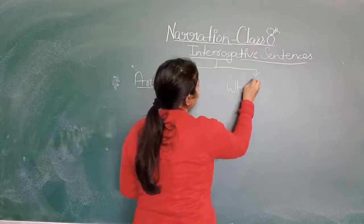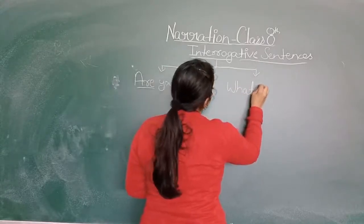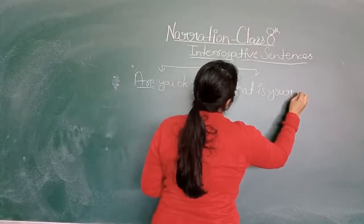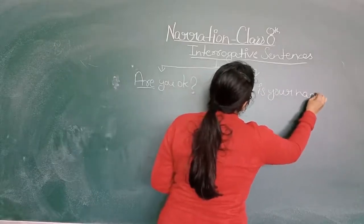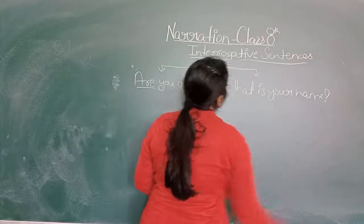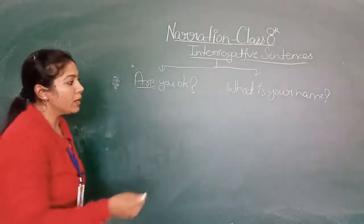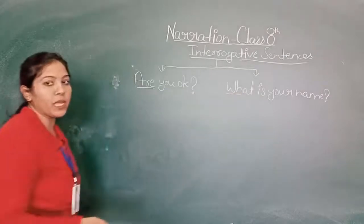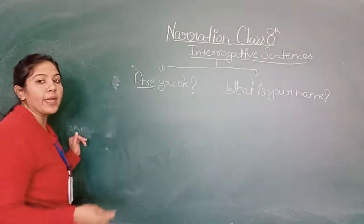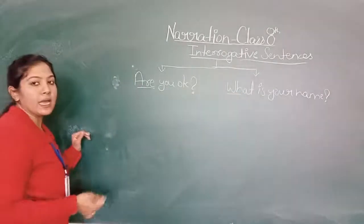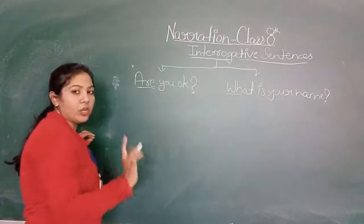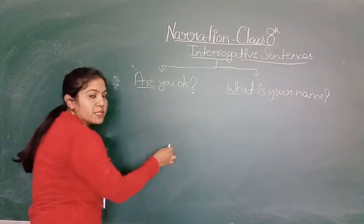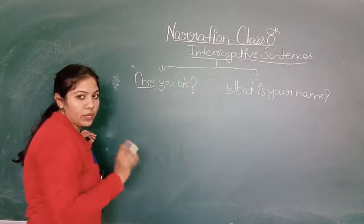Suppose a question is: 'What's your name?' It's a very basic sentence. So this started with a WH-word. WH-words include: whom, who, what, why. These are WH-words. The others start with auxiliary verbs. So these are the two types of interrogative sentences — one starting with auxiliary verbs, and the other starting with WH-words.